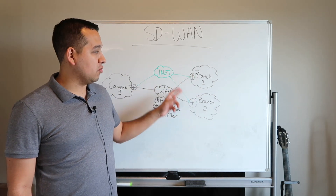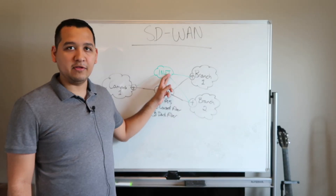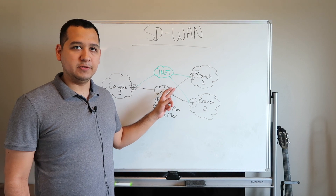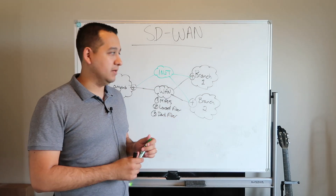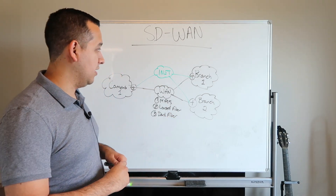This connection from the branch directly to the internet is called Direct Internet Access, or DIA — just keep that in mind.